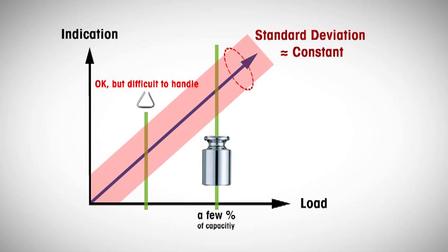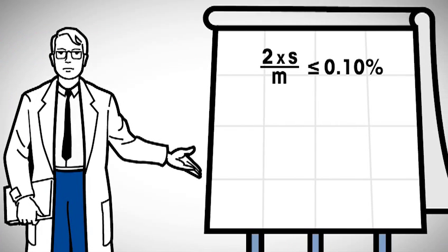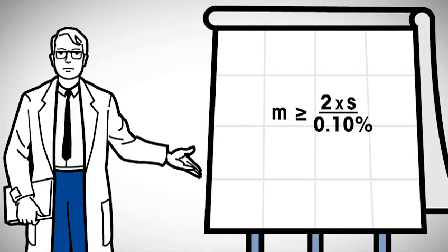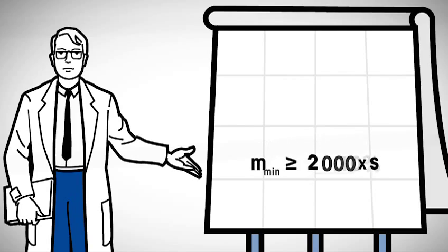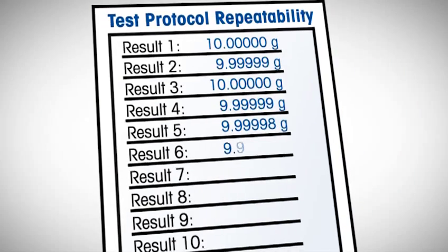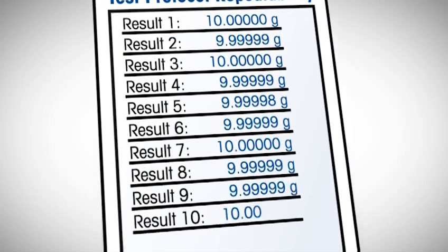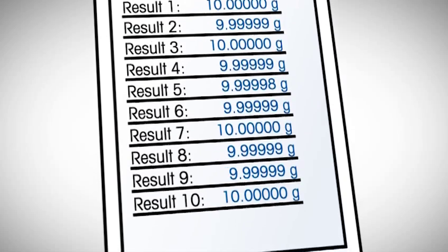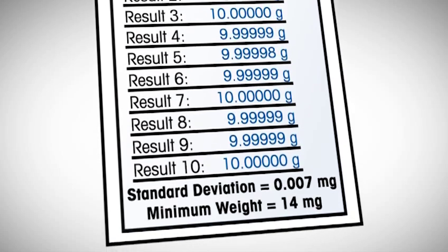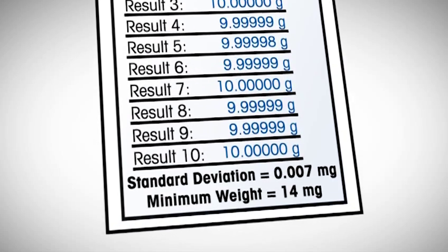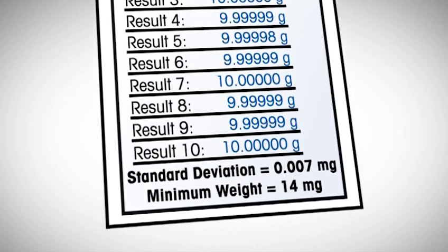USP states that the standard deviation is virtually independent of the sample mass at the lower end of the weighing range. Hence, a test weight of a few percent of the balance capacity can also be used to assess repeatability and derive the minimum weight from this formula. For example, if the standard deviation was measured as 7 µg, the minimum weight equals 14 mg.